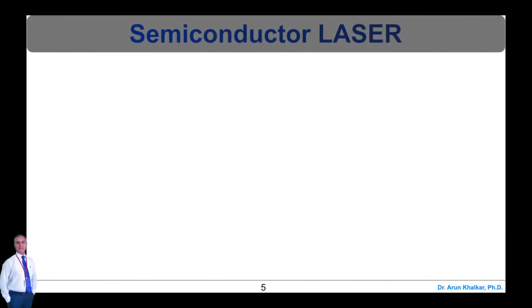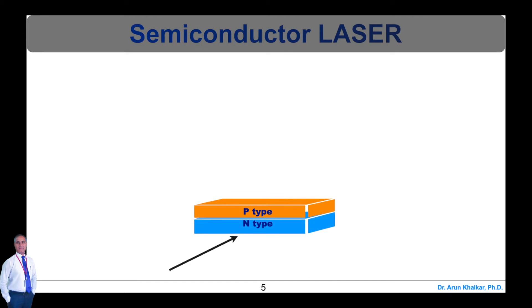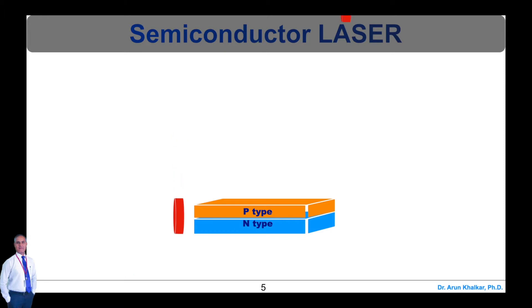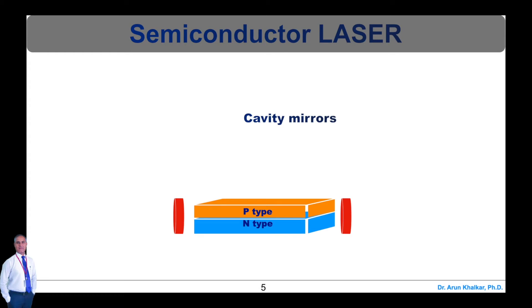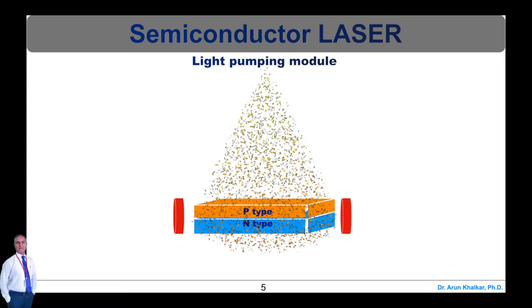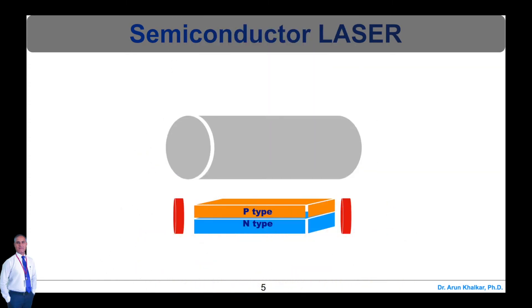The semiconductor laser is constructed by many parts like gain media, cavity mirrors, optical pumping module, and encapsulation case.